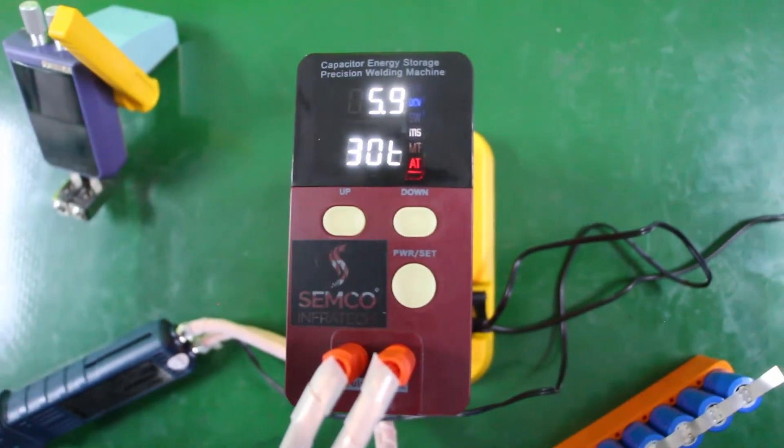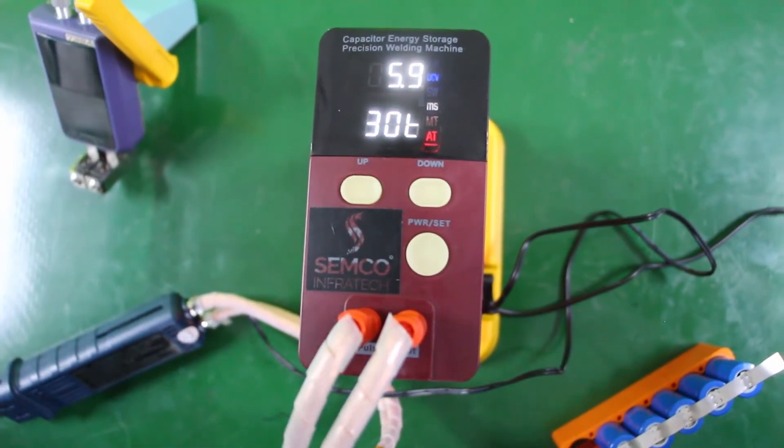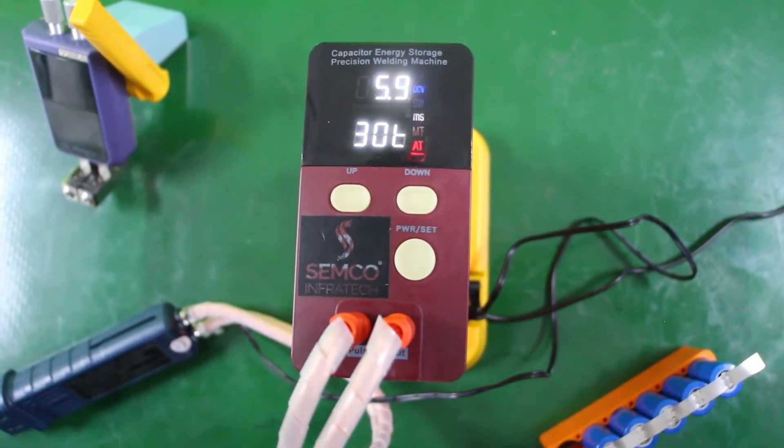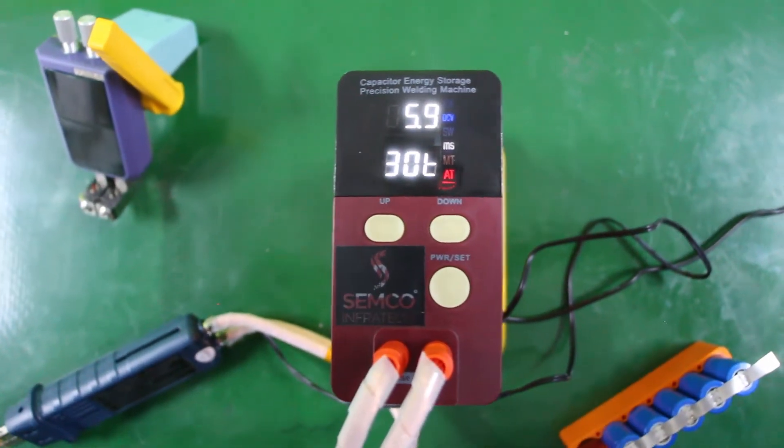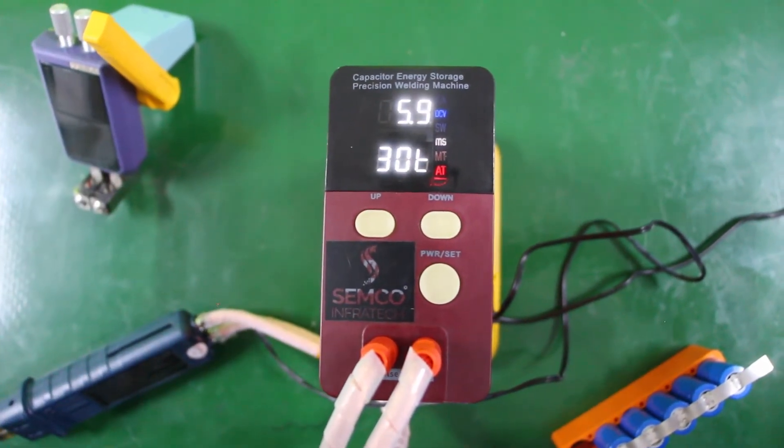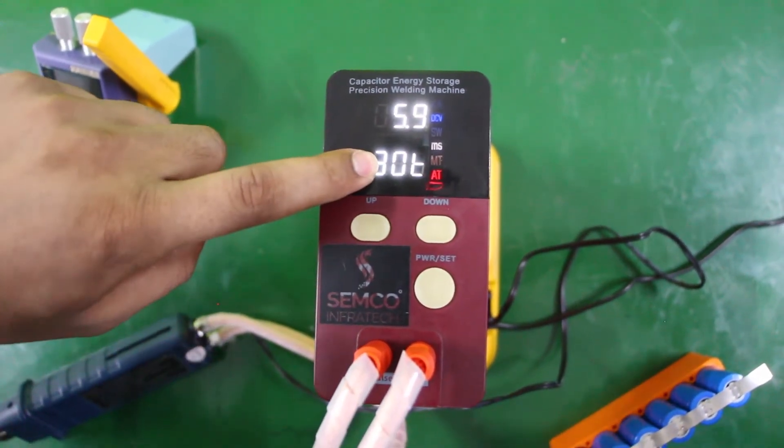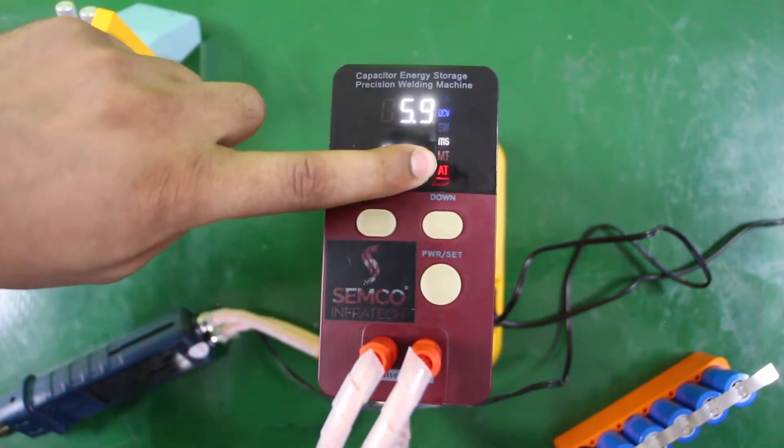Now comes to its technical parameters. It has two super capacitors which charge up to 238J. This machine's maximum voltage charge will be 5.2V to 5.8V. As you can see here it is 5.9V showing. This 30 is the joule power and this 80 is showing that this machine is currently working in automatic mode.